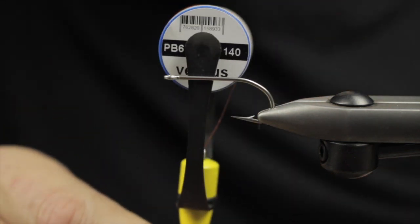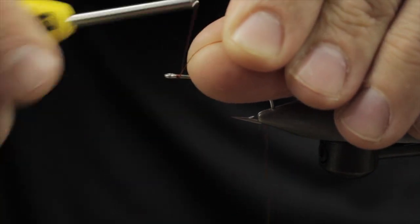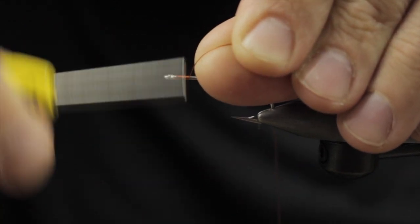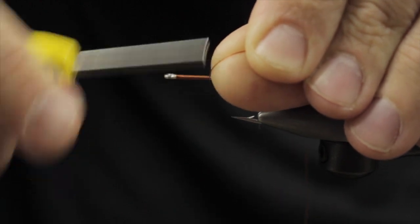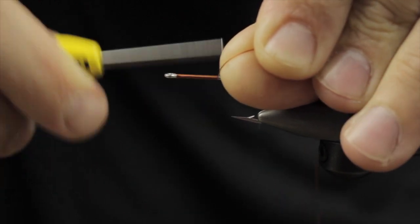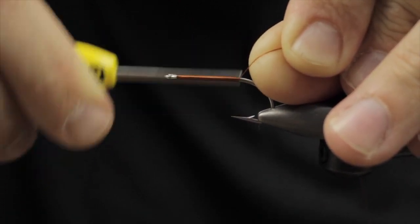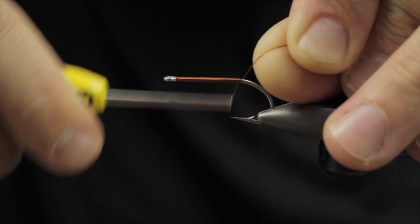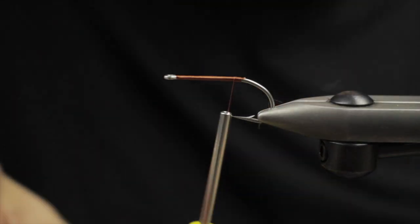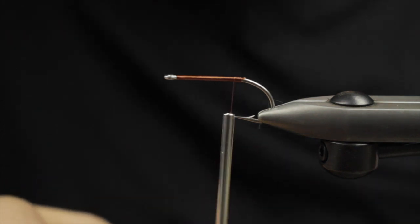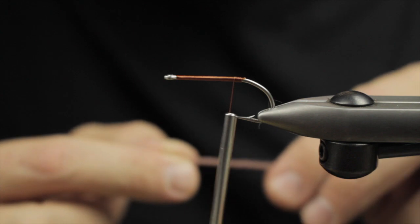In the vice we have a Daiichi 2546 size 2 using Vivas 140D brown thread for our underbody. We're going to make connecting turns all the way down the hook shank. A little hack here is I keep the thread tag pretty long and it helps you stack that thread moving forward. I do a few wraps moving forward just to clear it as I cut.